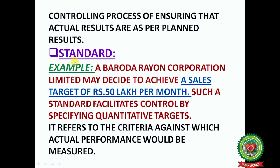Key term — Standard. Example: Baroda Rayon Corporation Limited may decide to achieve a sales target of rupees 50 lakh per month. This is a quantitative standard set by the company. Such a standard facilitates control by specifying quantitative targets. It refers to the criteria against which the actual performance would be measured — so the standard set is 50 lakh, and in future you compare your actual sales with this standard.